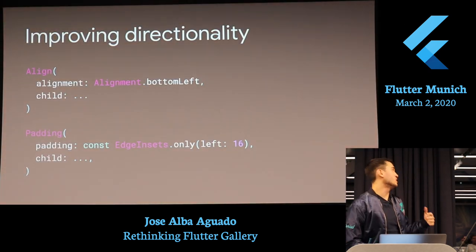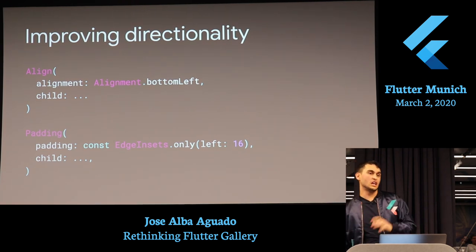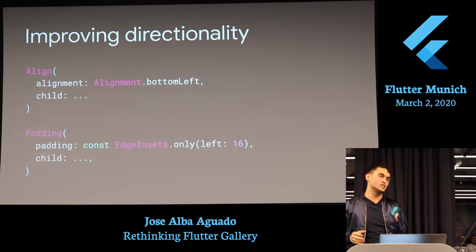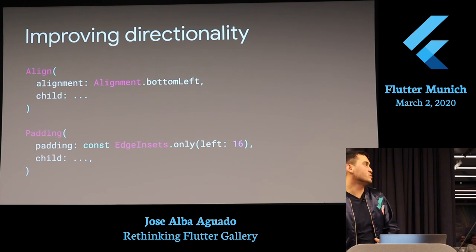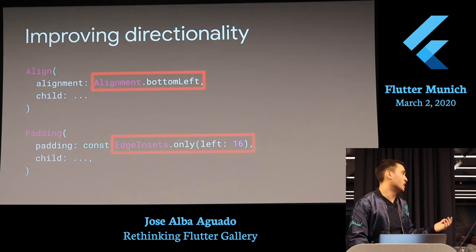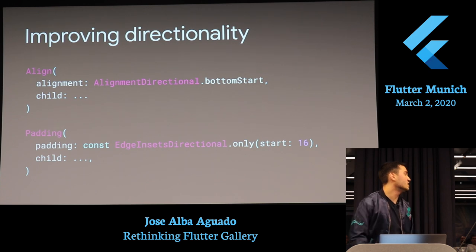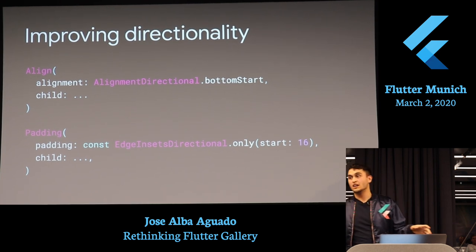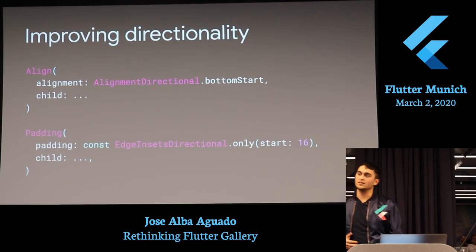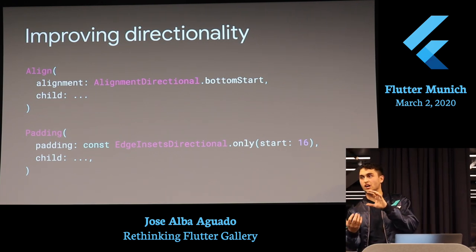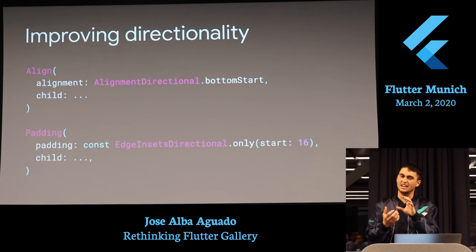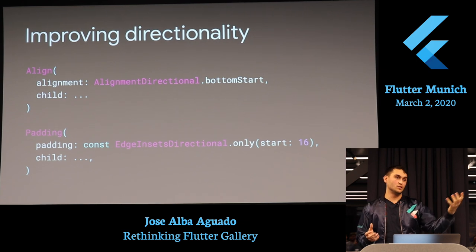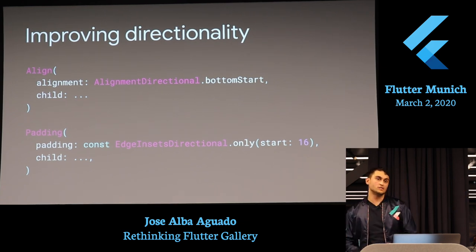Instead of aligning things to the left or right explicitly, we used align start and align end. So if start means left for LTR, it starts on the left — but if start means right for RTL, it starts on the right. So if you use the app in Hebrew, the application will flip over, which feels more native to speakers of that language.